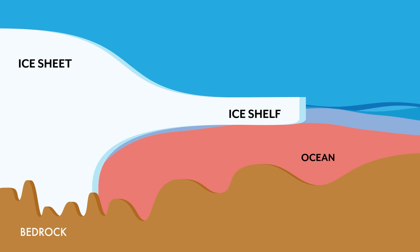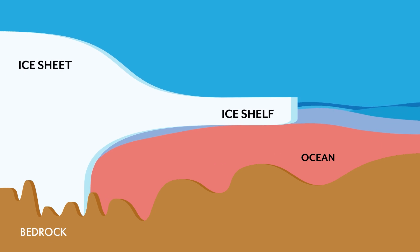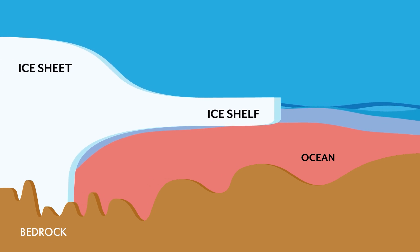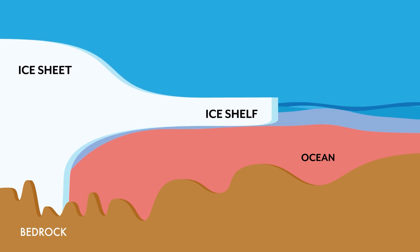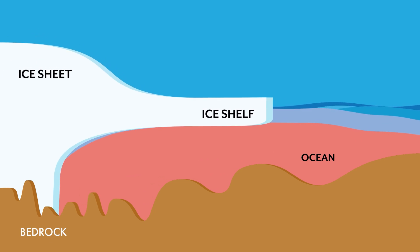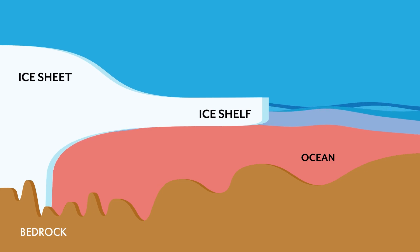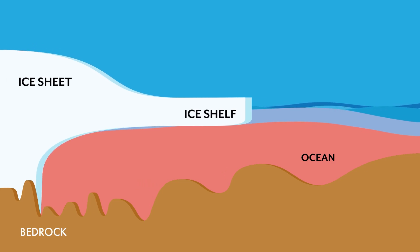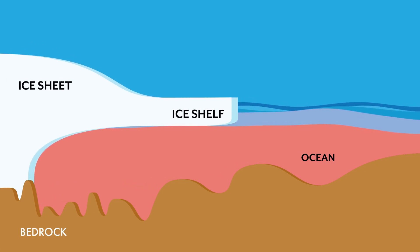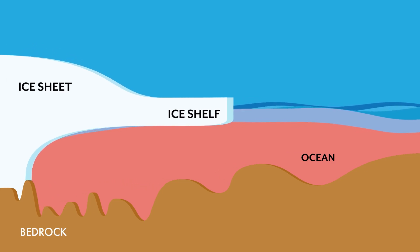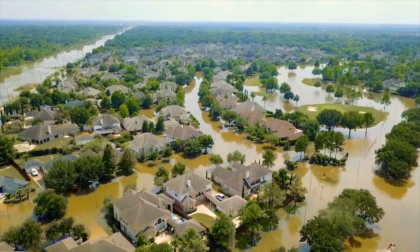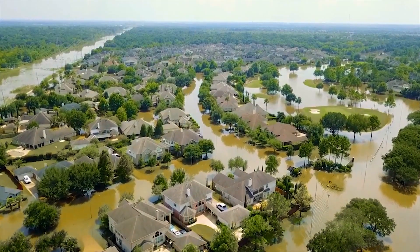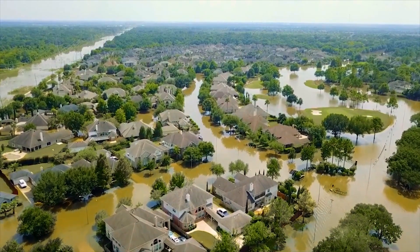If the ocean warming were only temporary, the ice shelf could go back to its original position. But the longer the ocean stays warm, the more ice is irreversibly lost, with a contribution to sea level that accumulates over time.